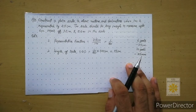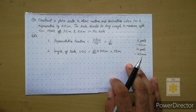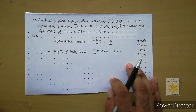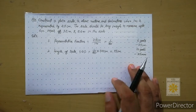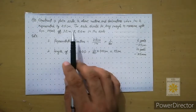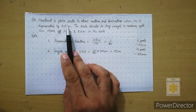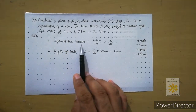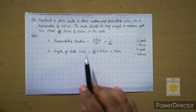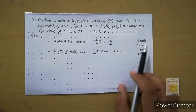Welcome to another lecture on engineering graphics. The motive of this lecture is to learn how to present our work on the grid sheet regarding scales and how to construct a plane scale. In the previous lecture we solved one problem on plane scale — we learned how to find the representative factor, how to find LOS, and how to decide the number of parts.